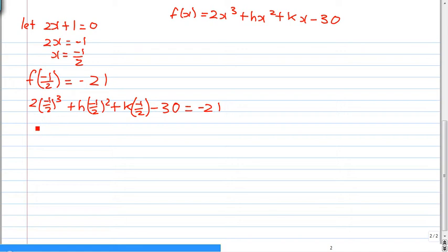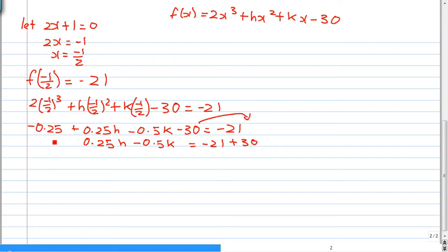So this term, press your calculators everyone, can be simplified into minus 0.25. This term here minus half squared would be 0.25, 0.25h. This is minus 0.5k minus 30 equals to minus 21. So 0.25h minus 0.5k equals to minus 21 plus 30, minus 30, I'll shift over to the other side. And even minus 0.25, let me shift it to the right-hand side of the equation.